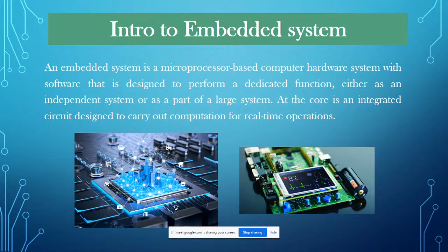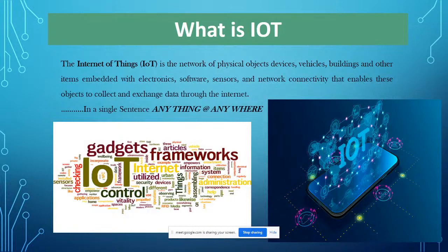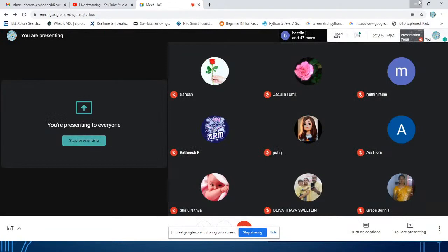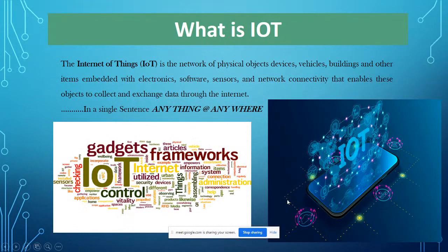Next, what is IoT? IoT stands for Internet of Things. Every data has to communicate — for example, from one fan to another fan, if one fan stops automatically, data controls the other fan. How is it possible? Through the internet. To build IoT, the first step is to collect data.